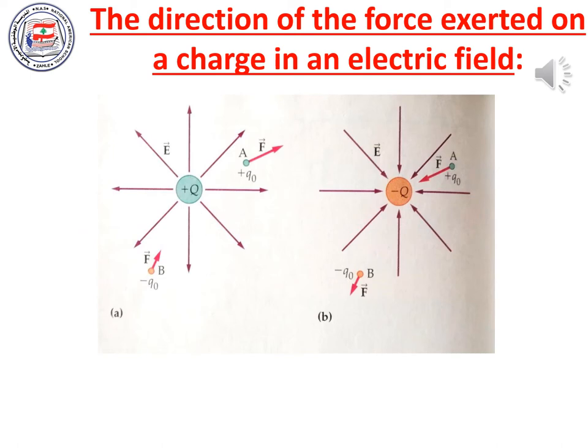As you can see in the figure, look to the left: we have a positive charge with an electric field coming out of it. If we put a negative charge in this electric field, the force acting on it is in the opposite direction to the electric field. But if we put a positive charge in this electric field, the force is in the same direction. Now look to the right: we have a negative charge with an electric field coming into it. If we put a negative charge in this field, the force is in the opposite direction; for a positive charge, the force is in the same direction as the electric field.